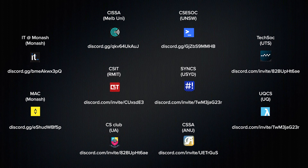I would also recommend reaching out to members within the various university coding clubs and societies via their Discord servers. Here are some popular Australian ones, and I'll leave the links in the description below. For Monash University, join the IT at Monash server or my club's server, Monash Association of Coding. For Melbourne University, join CISA's Discord server. For RMIT, join CSID. For UNSW, join CSESOC — also check out their YouTube videos, they're quite good. For UQ, join UQCS. For the University of Adelaide, join their CS club. For the Australian National University, join CSSA.